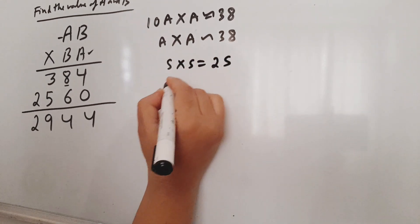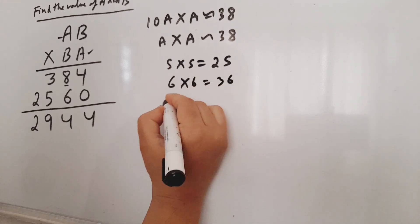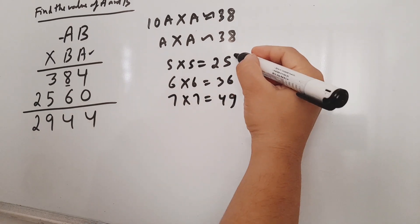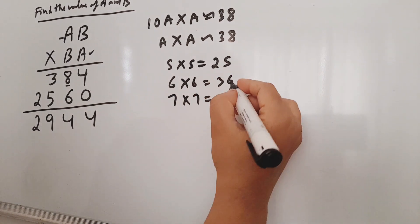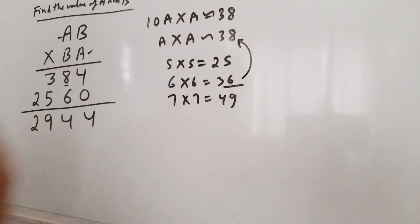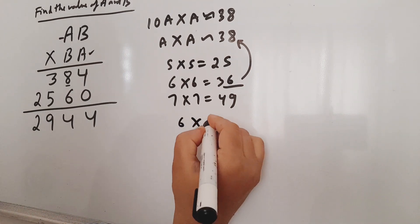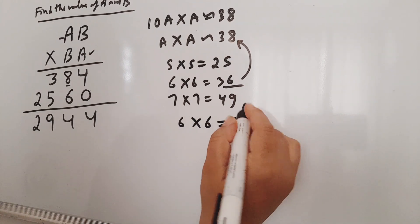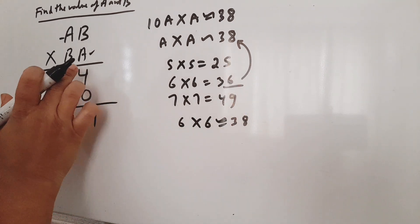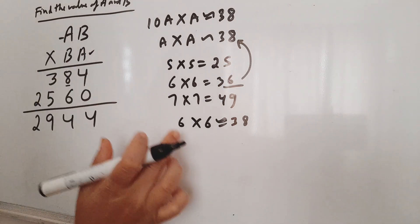Which is 38, which is 5, which is 6, which is 7, which is 49. If you see 25, 49, which is 6, which is 38. This value, which is 6 into 6, is similar to 38. Now we will get the value of 6.